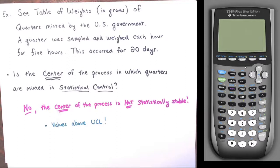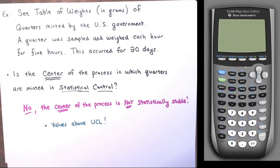To summarize: constructing an X-bar chart involves finding X-bar-bar (the mean of the sample means) for the center line, then using A₂ from the control chart constants table along with R-bar to find the UCL and LCL. That's how you monitor the center of a process. I hope this was clear and informative. Thanks very much for watching, and make sure to practice your own problems — that's the only way to get better.